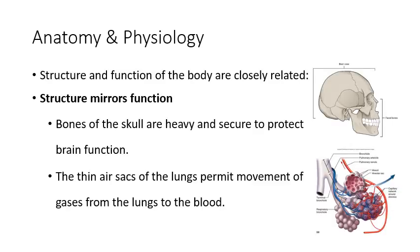Structure a lot of times is going to mirror function, which means that your body is designed in such a way that it works well. Certain structures are designed so that they function as protection. For example, in the pictures here we can see the bones of your skull. Those bones are made of very tough, durable bone so they can protect the soft brain underneath. That structure and function is very different from the picture on the bottom of your screen, which is of air sacs in the lungs — very delicate, very thin — because the function of those is for air to diffuse across. So structure is going to mirror function.